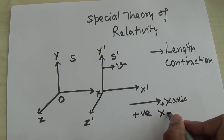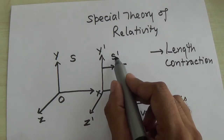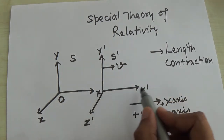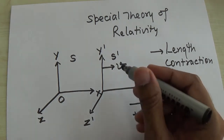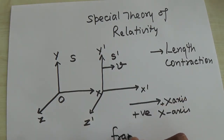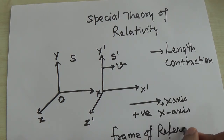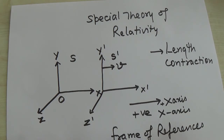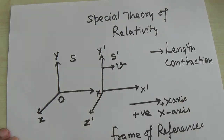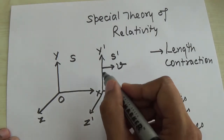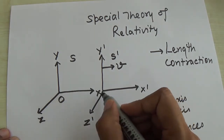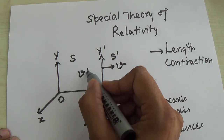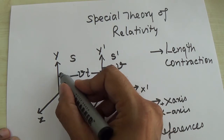The motion of the S' frame relative to S is along the positive X axis. The frames of reference we have considered, S and S', are inertial — meaning both frames follow Newton's first law of inertia. There is no acceleration between S and S'. At any time T, the distance between observer O and observer O' will be V times T.